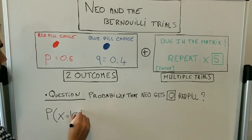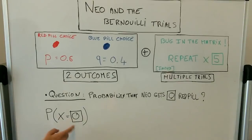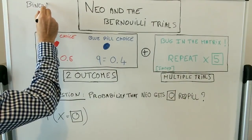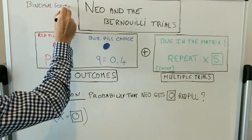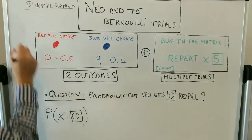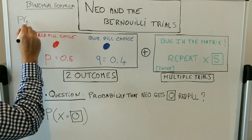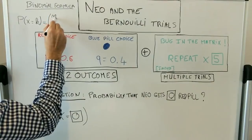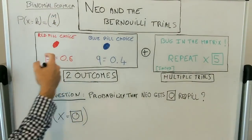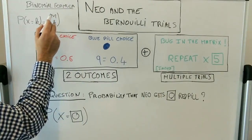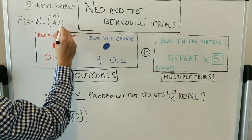So that probability is P of X equal to zero — zero successes. To figure that out we need what we call the binomial formula. We can use that formula because we are in a Bernoulli trial situation. The binomial formula says that the probability to get K successes is N choose K, where N is the number of repetitions and K is the number of successes.